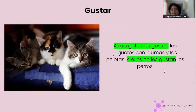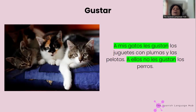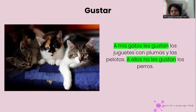Más ejemplos: a mis gatos les gustan los juguetes con plumas y las pelotas; a ellos no les gustan los perros. My cats — here instead of saying 'a ellos' I'm using 'a mis gatos.' You can also substitute with names or a name: a mis gatos, a mi mamá, a Carlos y María, a Julia.